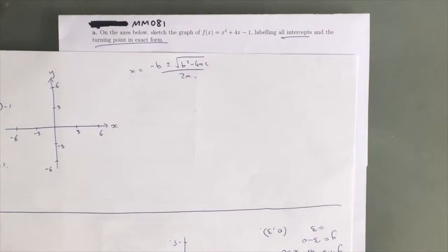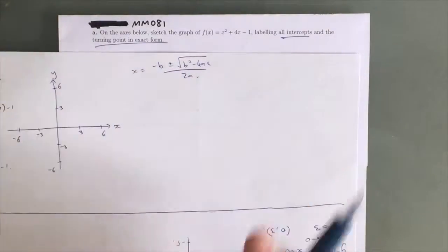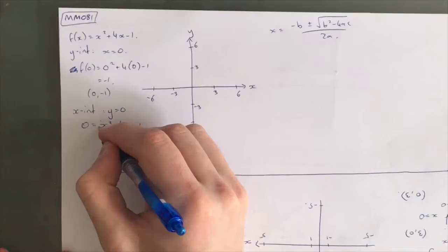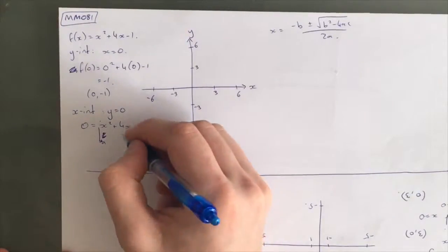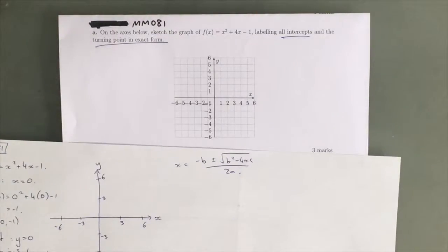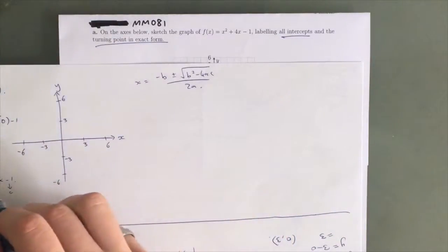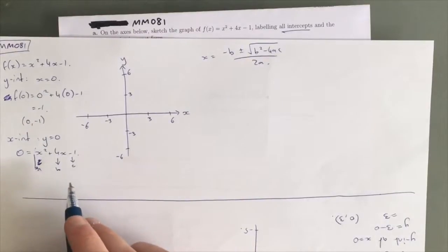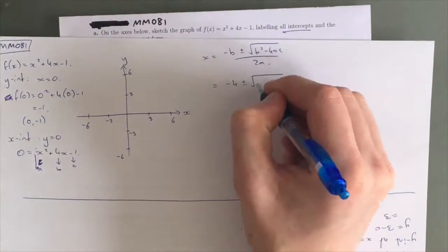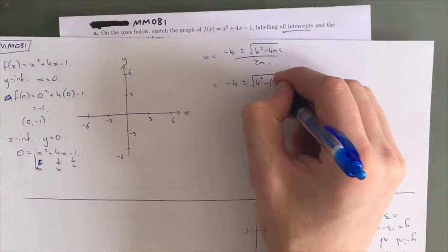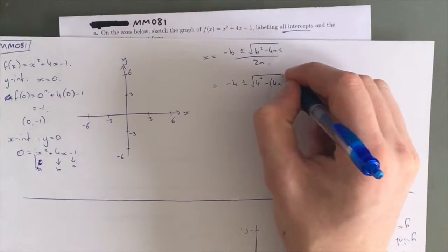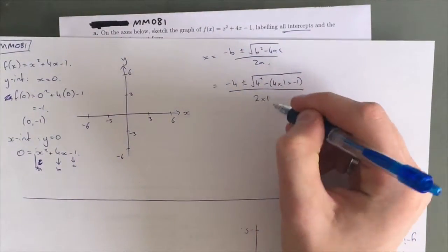You will get used to this and eventually know it off by heart. a, b, and c are simply the coefficients of the quadratic — the coefficient in front of x squared is a, so there's actually a 1 in front. This is b and this is c. From here, we know that a equals 1, b equals 4, and c equals negative 1. So we get negative 4 plus minus the square root of 4 squared take away 4 times 1 times negative 1, over 2 times 1.